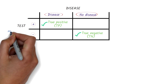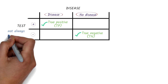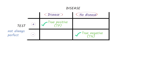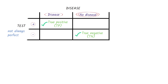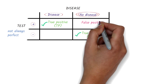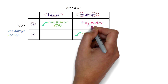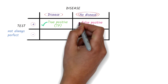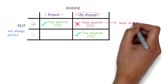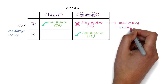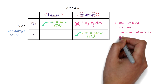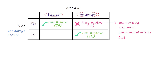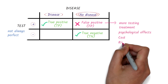However, because tests are not always perfect, a test can be positive even though the person does not have the disease. This is called a false positive. This is not ideal because it could lead to further testing or treatment that's not necessary, negative psychological impacts, and may come with an economic cost or added risk.